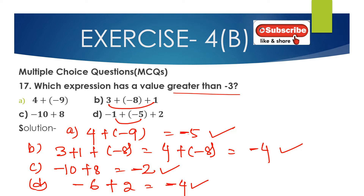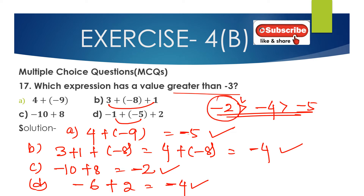Comparing the results: minus 5, minus 4, minus 2, and minus 4. With negative integers, the one closer to zero is greater. So minus 2 is greater than minus 4, which is greater than minus 5. Therefore, option C with value minus 2 is the correct answer.